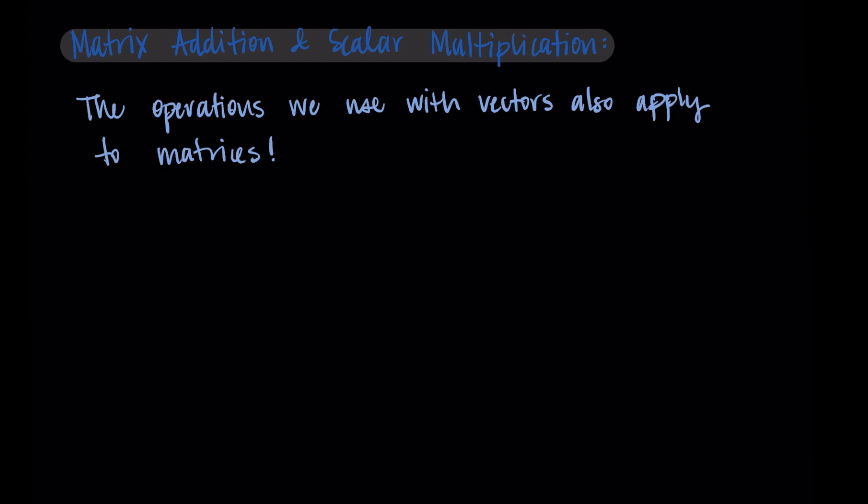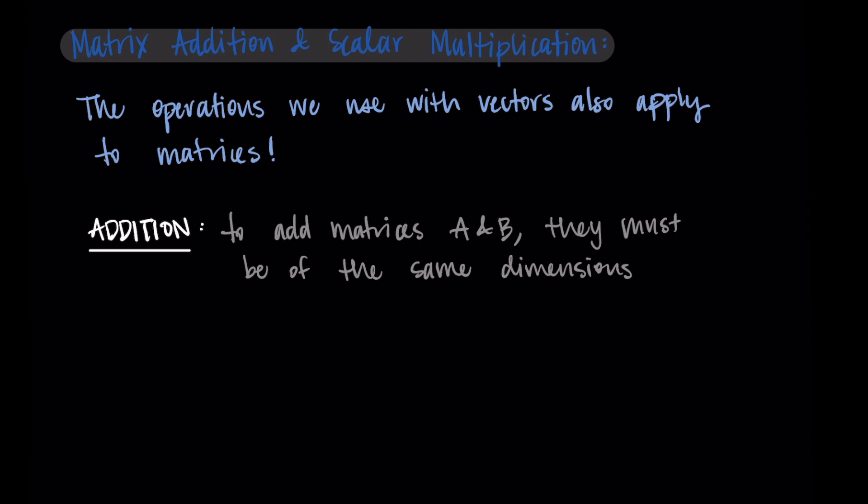For addition, in order to add two matrices A and B, they must have the same dimensions. So we need the same number of elements in each matrix - the same number of rows and the same number of columns. This should align with what you know about adding vectors.